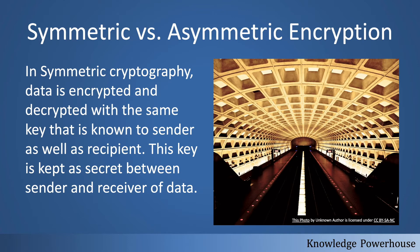Symmetric cryptography is a very simple one. You use a key, that key is used to encrypt the message, and then the same key is used to decrypt the message. For example, instead of A you use B, instead of B you use C — you shift all the alphabets by one, and that shift amount is the key.